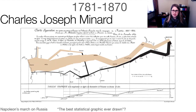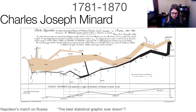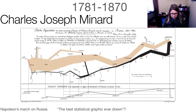Then we get into the late 1700s, early 1800s. There's a man named Charles Menard, and he does a bunch of data visualizations, including this one on Napoleon's March on Russia. Many people say that this is the best statistical graphic ever drawn. What's happening is we've got the number of soldiers who started out, and then we're moving through time. As they move in this direction, some soldiers break off, maybe rejoin, and the number of soldiers is getting less and less over time as they're going to Moscow.